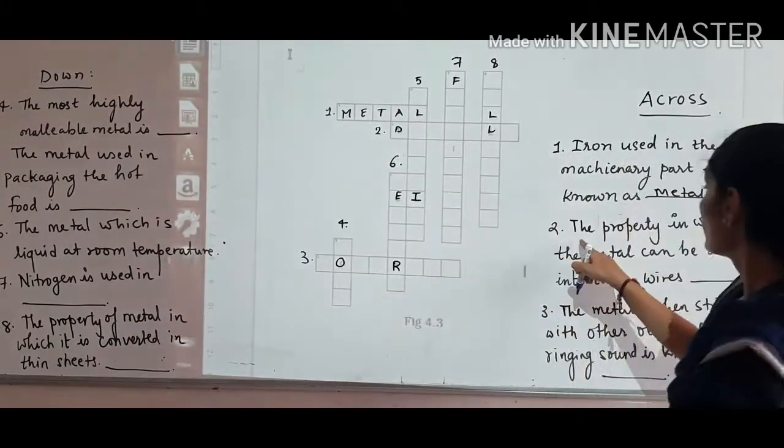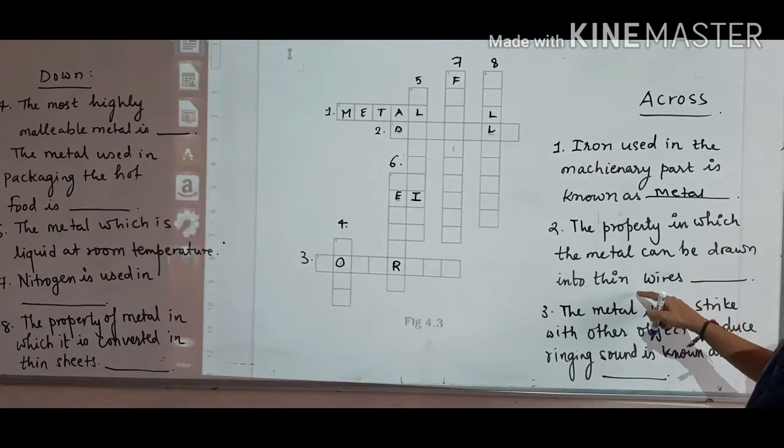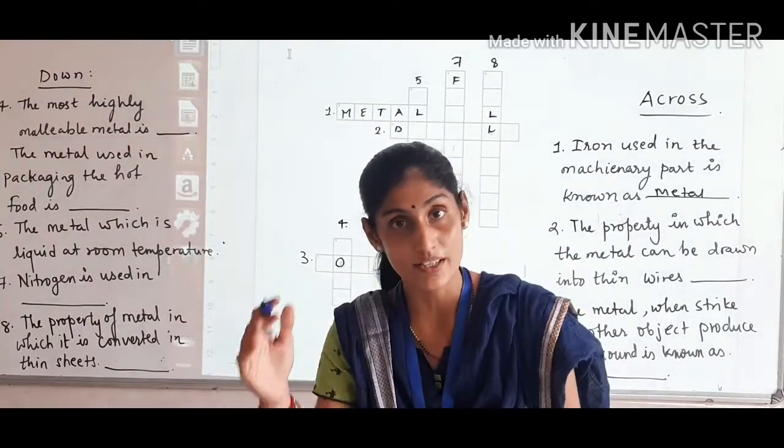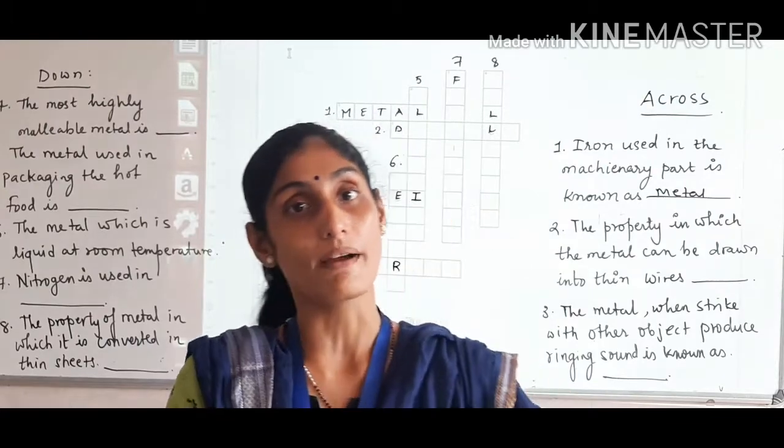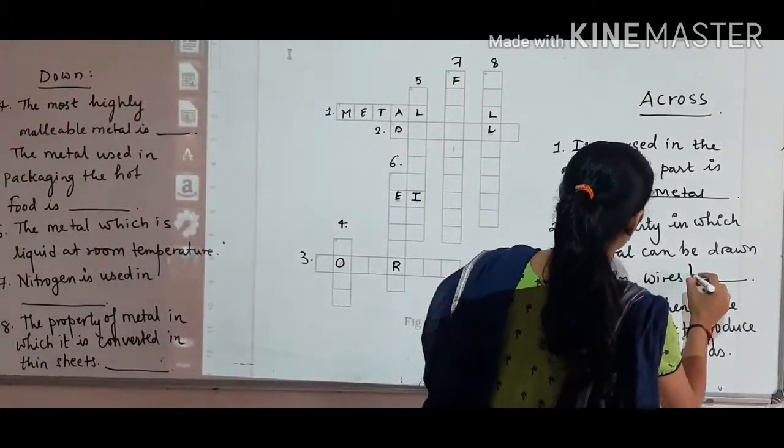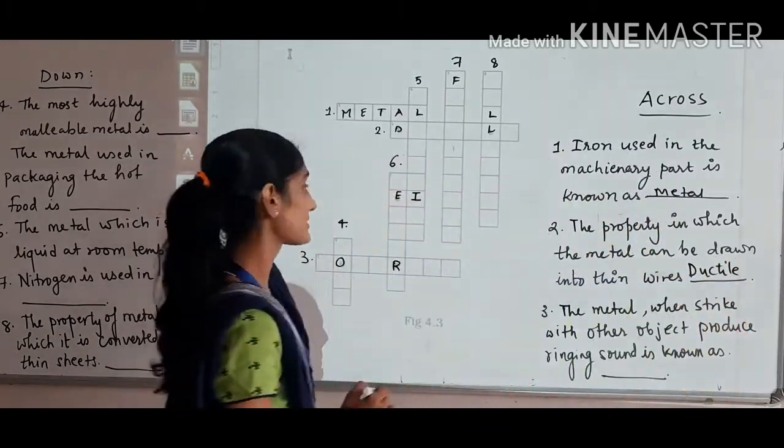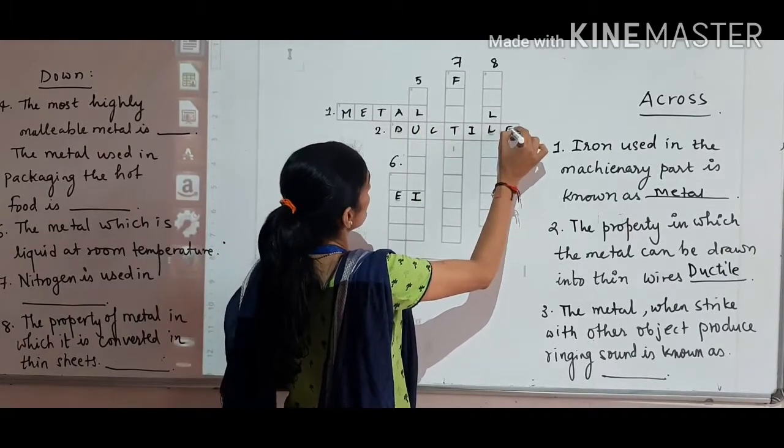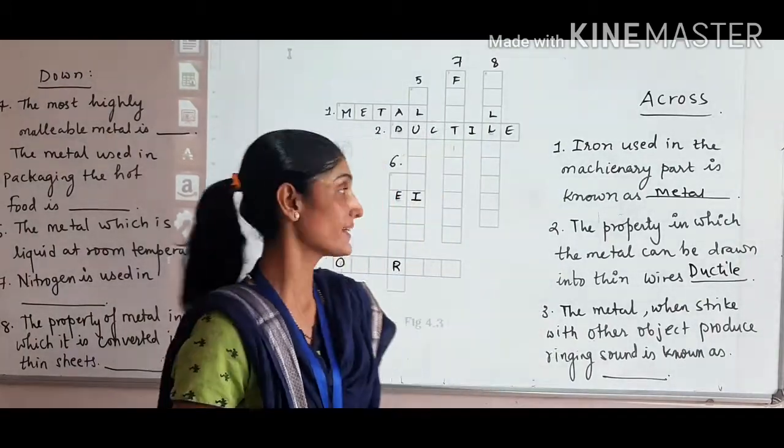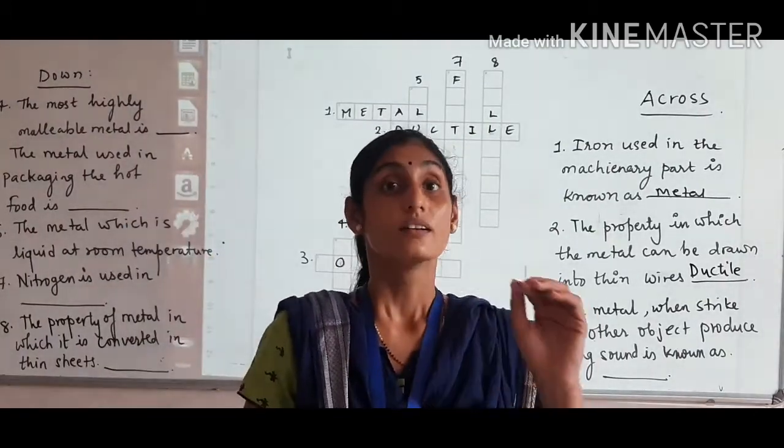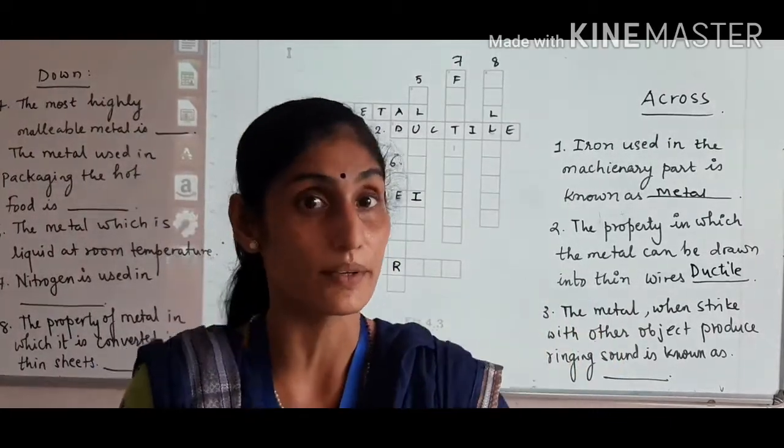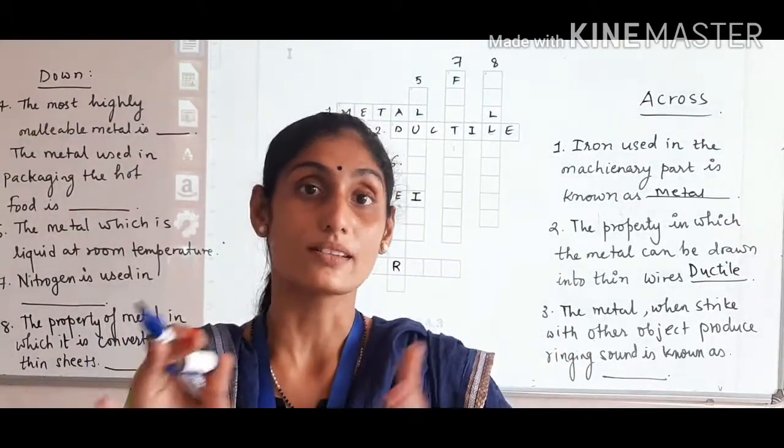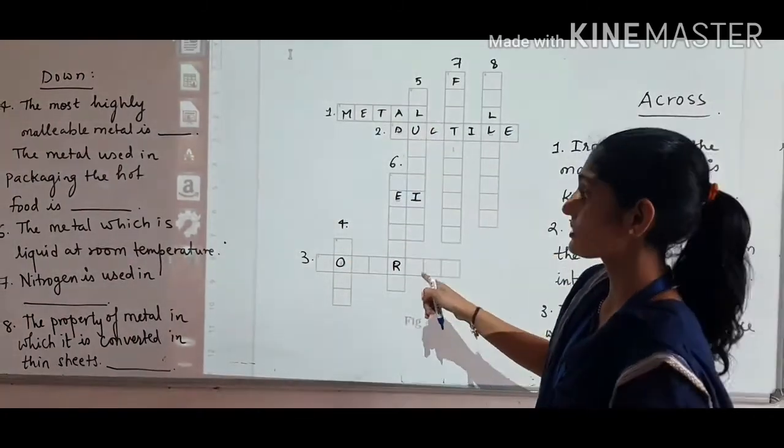Second is the across method. The property in which the metal can be drawn into thin wires. The property by which the metal is going to be converted into wires is known as ductility. That particular metal is known as ductile. Keep it in mind: whenever you have filled in wires, always use the capital letters, not small letters, to fill in this box.